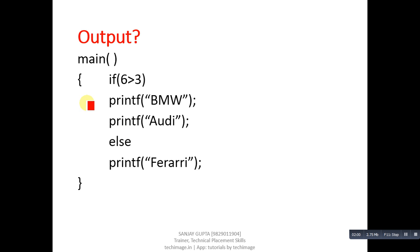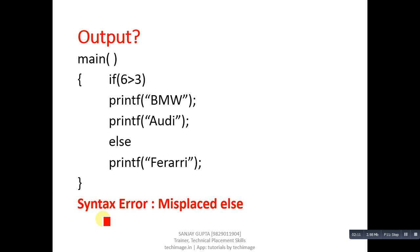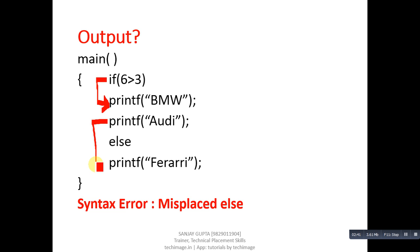The next code segment contains an if condition: 6 greater than 3, then two printf statements are written, then else and another printf. The output is a syntax error — misplaced else — meaning this code will not compile. The reason is that this if is followed by two printf statements. If we want to execute multiple statements, curly braces are required. Without curly braces, if is linked with only the first printf. The remaining three statements are disconnected from the if. Since else is also disconnected, and we cannot use else without an if condition, that's why the syntax error 'misplaced else' is produced.